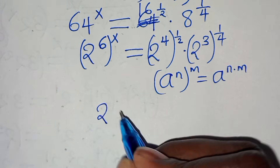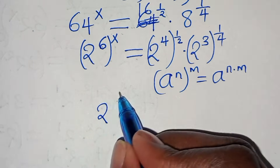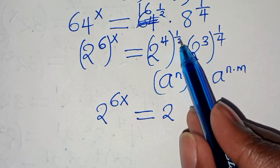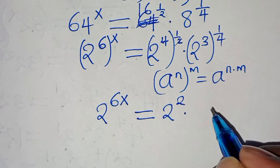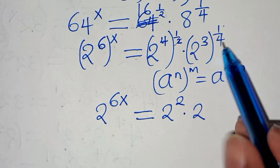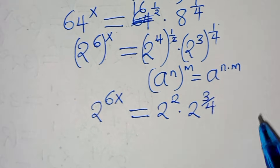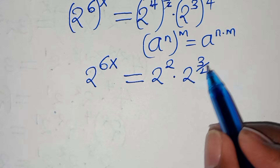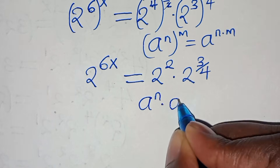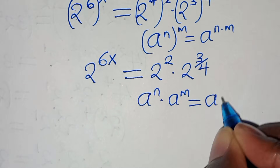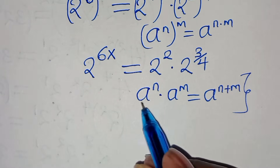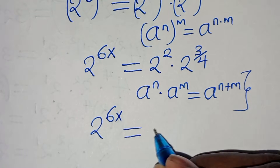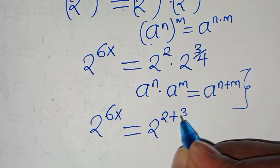So we have 2 to the power of 6x equal to 2 to the power of 4 times a half, and 2 to the power of 3 times 1 over 4, which is 3 over 4. Then 2 to the power of 2 times 2 to the power of 3 over 4, using the property a to the power of n times a to the power of m equals a to the power of n plus m, gives us 2 to the power of 6x equal to 2 to the power of 2 plus 3 over 4.